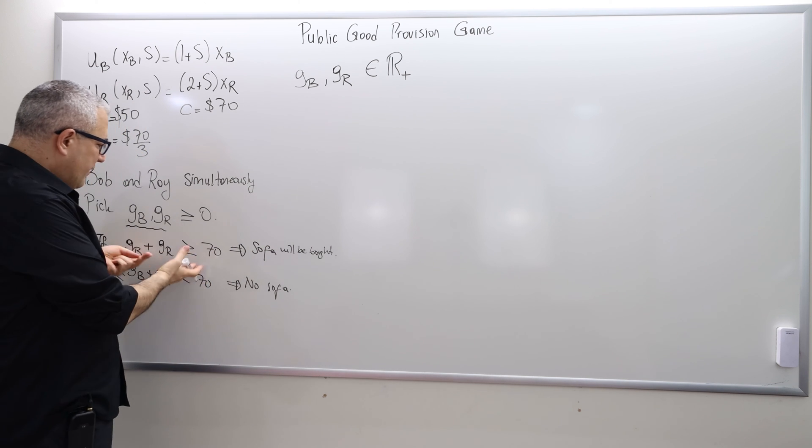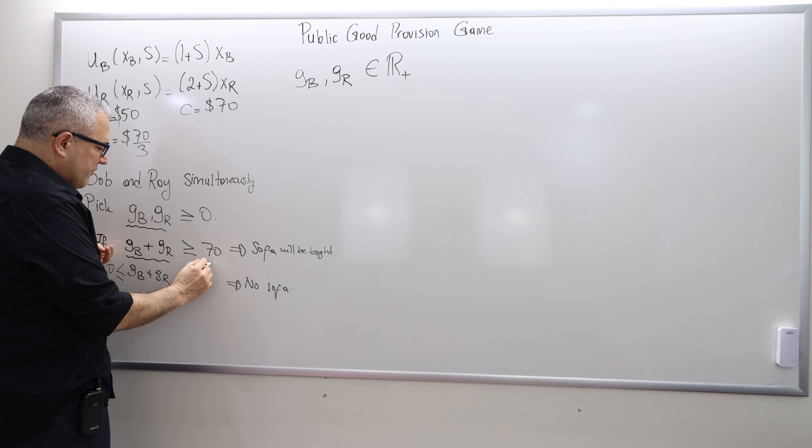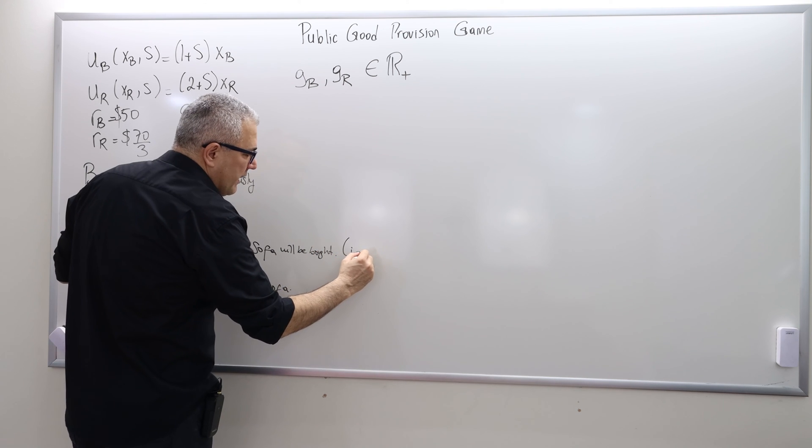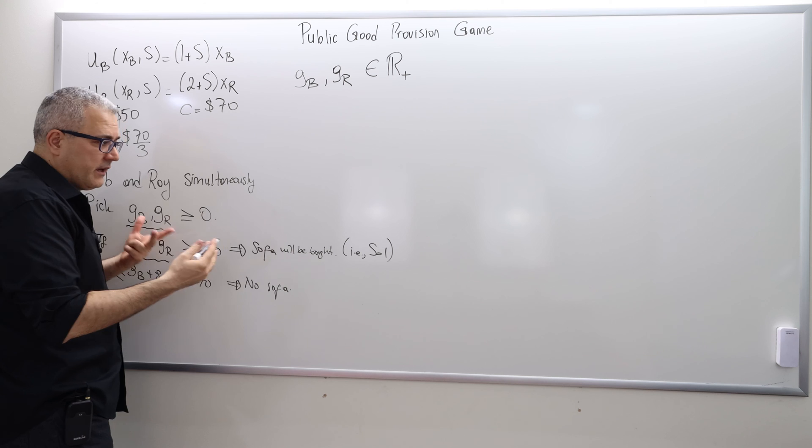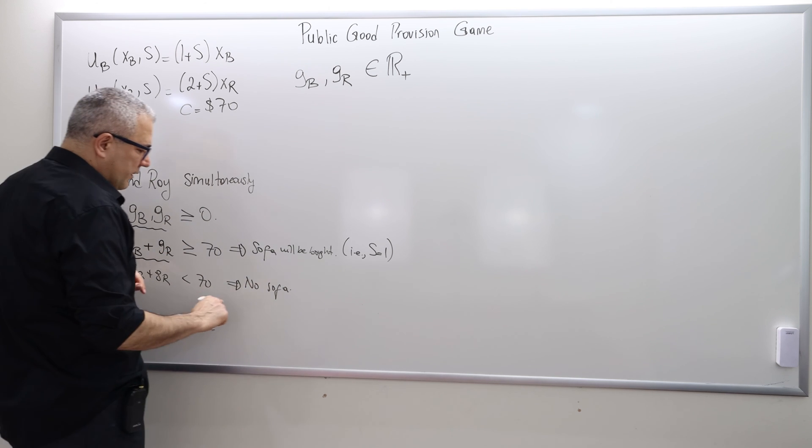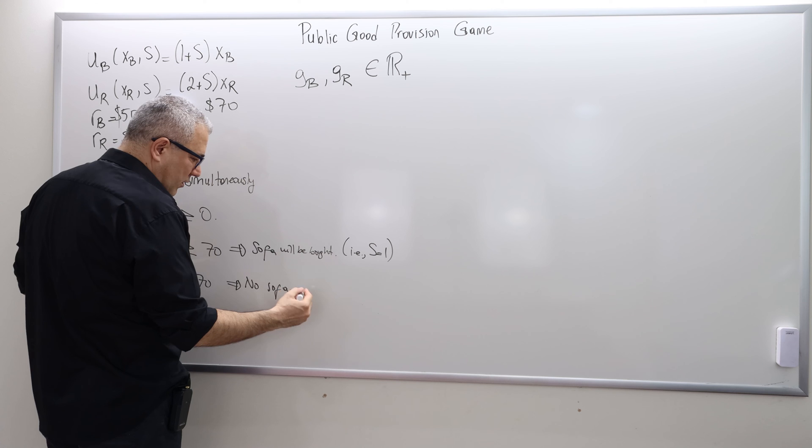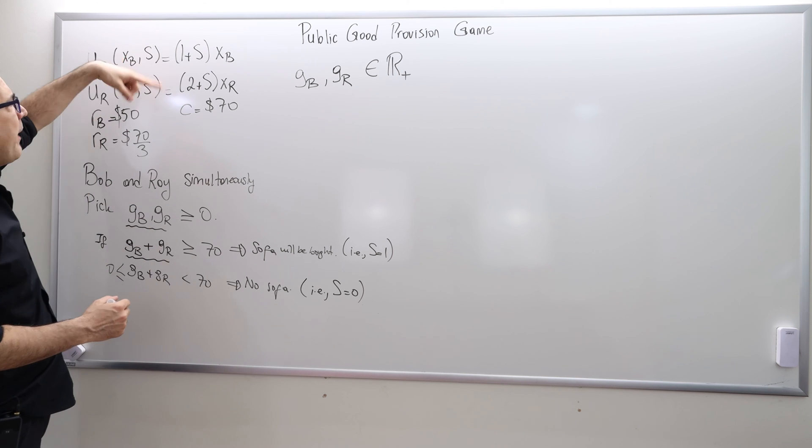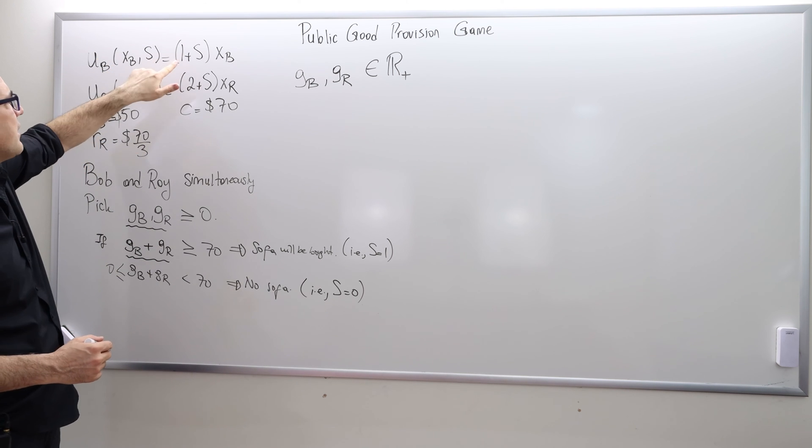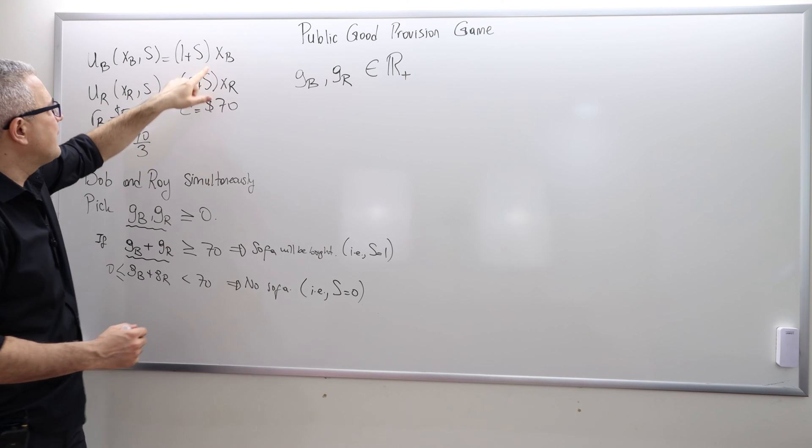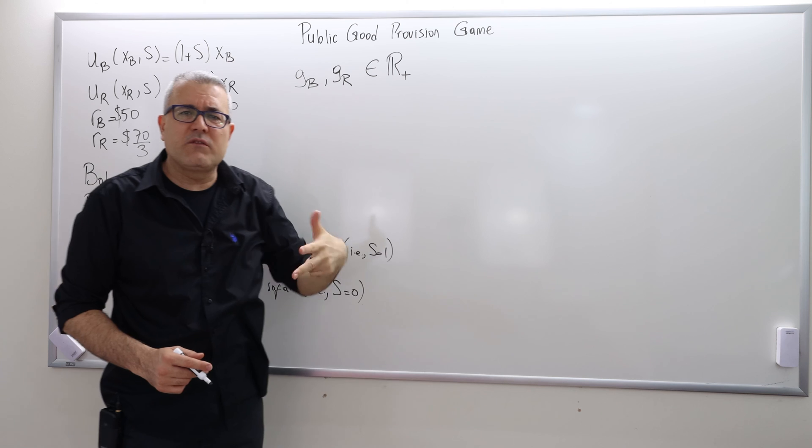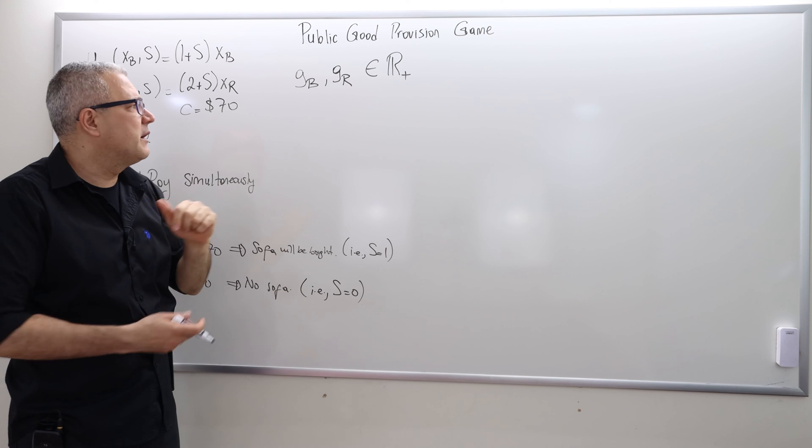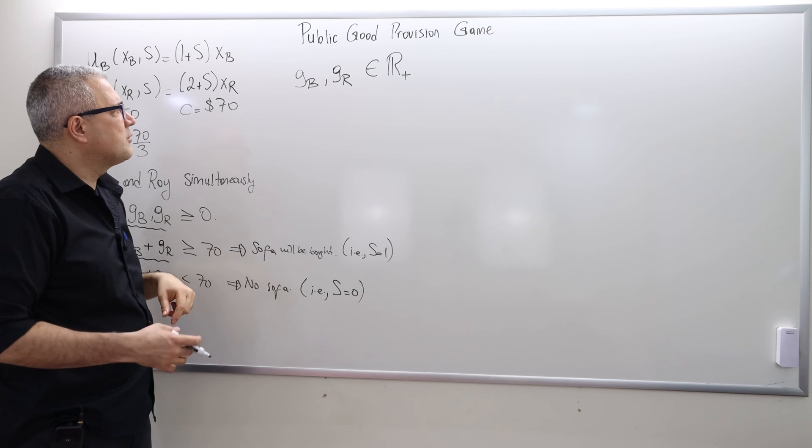And then the rules are simple. If the sum is greater than or equal to 70, the S is going to be equal to 1, i.e., the sofa is going to be equal to, so they will have the sofa. If the sum of the contribution is less than 70, the cost of the sofa, then there's going to be no sofa, so S is going to be equal to 0. And the payoffs are given by those utility functions, 1 plus S depending on the value of S, and then XB, so Bob spends the rest of his money on private consumption, and Ray also spends the rest of his money on private consumption.